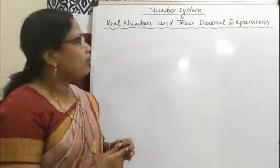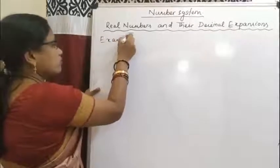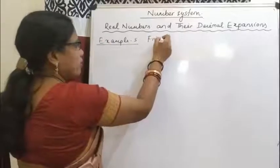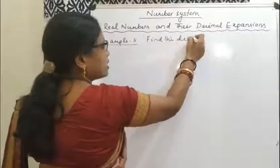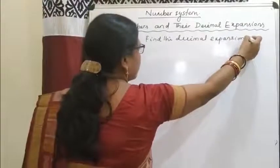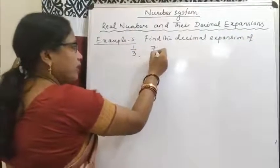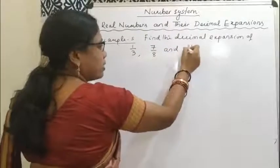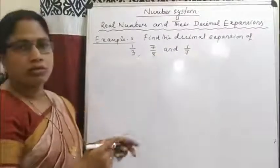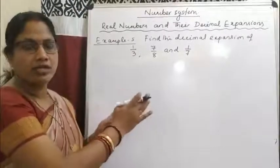Then we will study what is the difference between the decimal expansion of rational numbers and irrational numbers. So here I will take an example — this is Example 5. Find the decimal expansion of 1/3, 7/8, and 1/7. We will find the decimal expansion of these 3 rational numbers one by one, then discuss the differences among them.